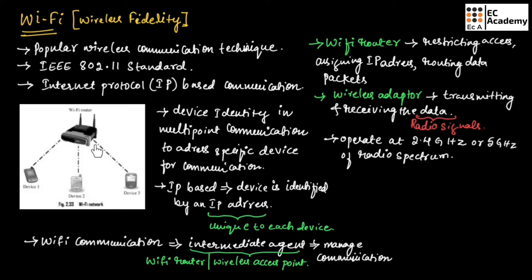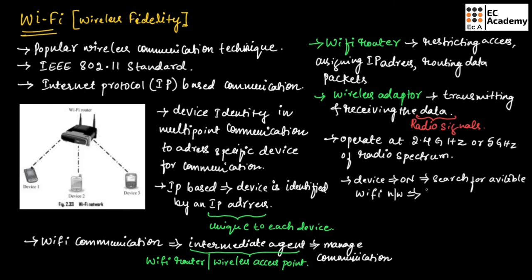For communicating with devices over a Wi-Fi network, when the device is turned on it searches for available Wi-Fi networks in the vicinity and lists out the service set identifier (SSID) of available networks. Whenever the device is near any Wi-Fi and turned on, it will list out the SSIDs of available networks.